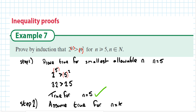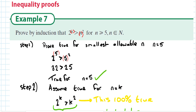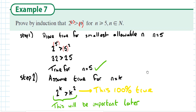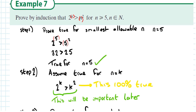Step 2: assume true for n equals k. Simply substitute n equals k, so you get 2 to the power of k is greater than k to the power of 2. As far as we're concerned, this is 100% true. We're actually going to come back to this line in a little bit — it will be important later on.